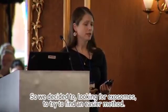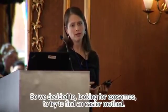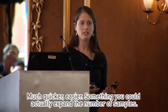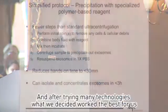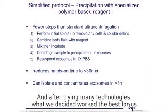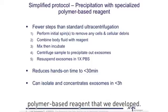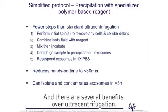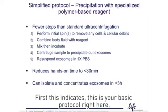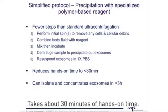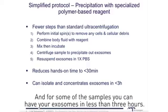So we decided, looking for an easier method for exosomes — much quicker, easier, something you could actually expand the number of samples with — and after trying many technologies, what we decided worked the best for us was a precipitation method using a specialized polymer-based reagent that we developed. This is your basic protocol — very simple, five steps. It takes about 30 minutes of hands-on time, and for some samples you can have your exosomes in less than three hours, much improved over ultracentrifugation, which can take at least half a day or sometimes several days.